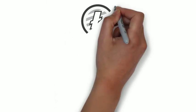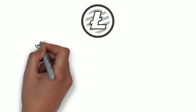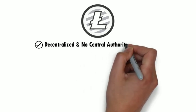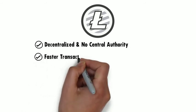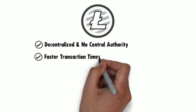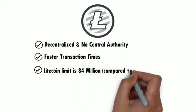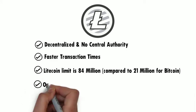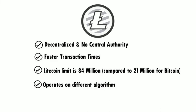2. Litecoin. Litecoin was launched in 2011 as an alternative to Bitcoin. Like other cryptocurrencies, Litecoin is an open-source, global payment network that is completely decentralized, meaning there are no central authorities. Here are a few differences between these digital currencies: Litecoin is believed to feature faster transaction times. The coin limit for Bitcoin is 21 million, whereas the coin limit for Litecoin is 84 million. They operate on different algorithms — Litecoin's being Scrypt and Bitcoin's being SHA-256.